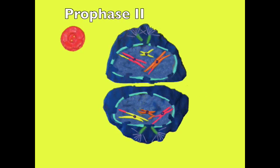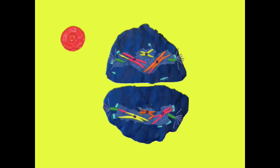Meiosis II begins. The chromosomes are not duplicated after telophase I. In prophase II, the centriole pair splits to two different sides of the cell, connecting to the chromosomes at the kinetochore. The motor proteins help move the chromosomes towards the equator for metaphase II.